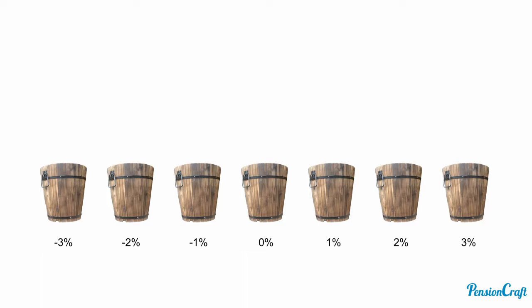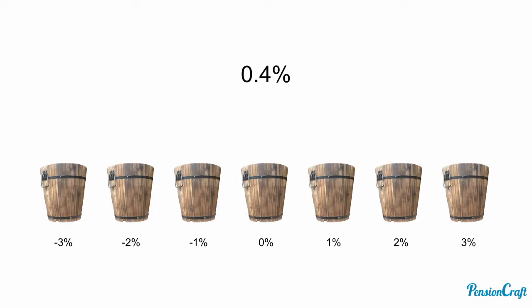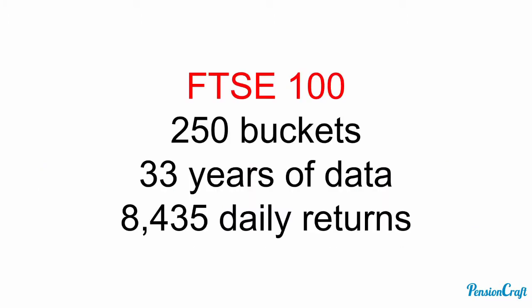Using our patented bucket technology we'll explain the idea of a return distribution. Let's say we look at the returns on the FTSE 100. On a given day, say the return is 2.3% — in that case we'd put the return into the 2% bucket. On another day we might get a negative return of minus 1.2%, which would go into the minus 1% bucket. On another day we might get 0.4%, and that would go into the 0% bucket. Over time we'd start to build up a return distribution. So let's do that for the FTSE 100: instead of 7 buckets we'll have 250 buckets, and instead of a few days we'll have 33 years of data.